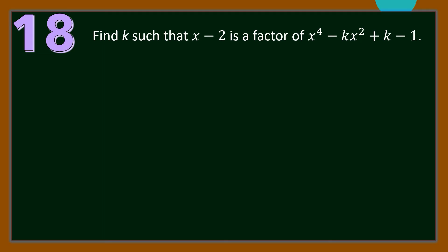Number 18. Find k such that (x − 2) is a factor of x⁴ − kx² + k − 1. For our solution, we're going to use the Factor Theorem. If (x − 2) is a factor of the given polynomial, then P(2) must be equal to 0.